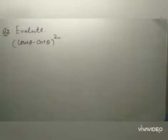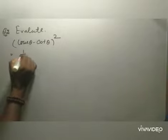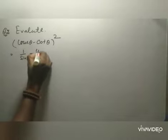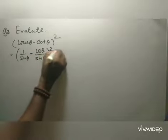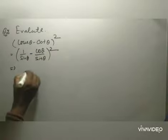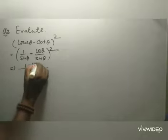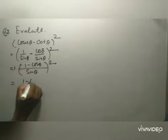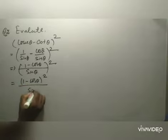Evaluate (cosec θ - cot θ)². This is (1/sin θ - cos θ/sin θ)². Here, sin θ is the LCM, giving (1 - cos θ)² over sin²θ.